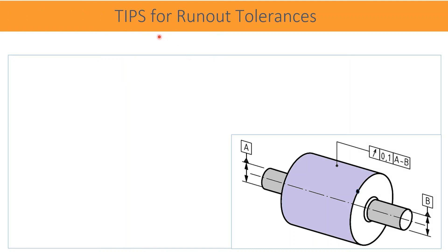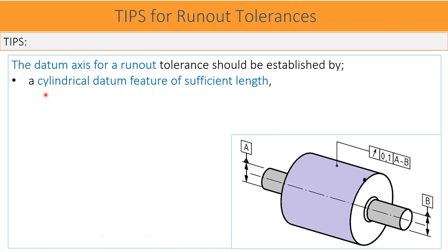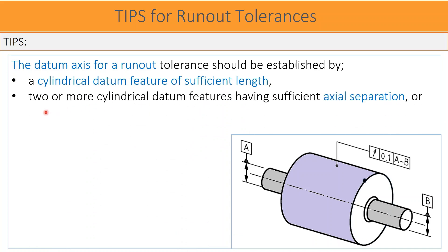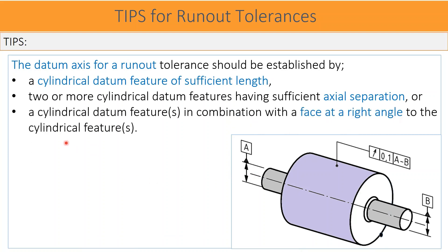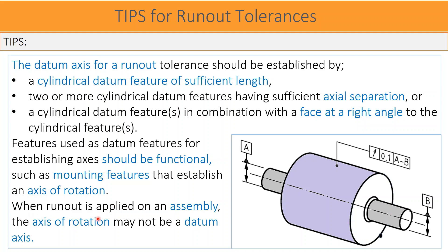There are a few tips for run out controls and measurements. The datum axis for a run out tolerance should be established by a cylindrical datum feature of sufficient length, two or more cylindrical datum features having sufficient axial separation, or a cylindrical datum feature in combination with a face at a right angle to the cylindrical feature. Features used as datum features for establishing an axis should be functional, such as mounting features that establish an axis of rotation. When run out is applied on an assembly, the axis of rotation may not be a datum axis.